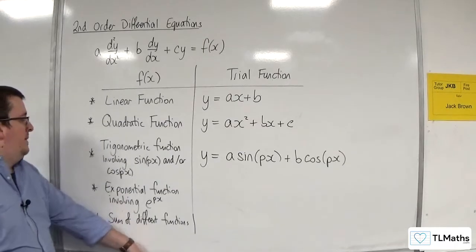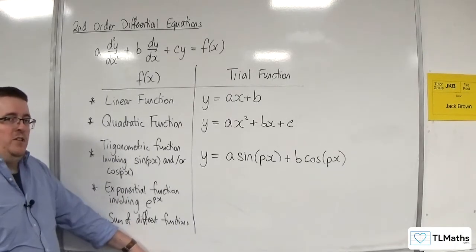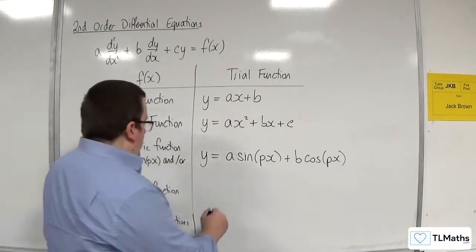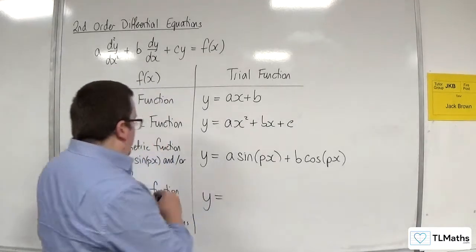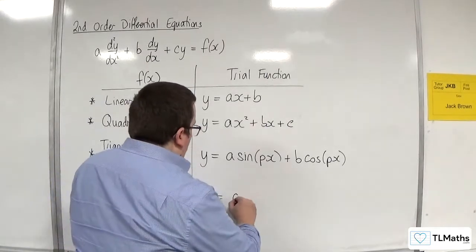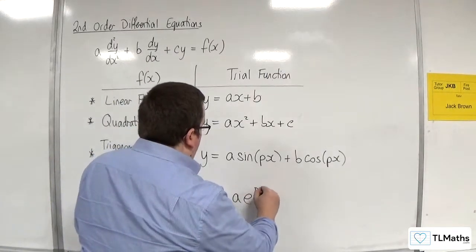Now, if it's an exponential function involving e to the px, then your trial function should also be some multiple of e to the px. So a e to the px.